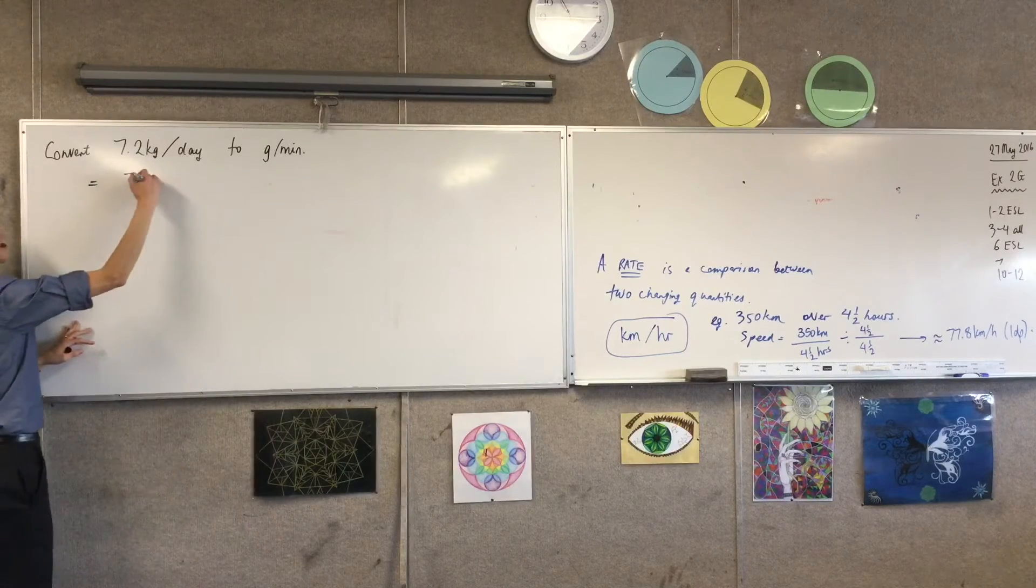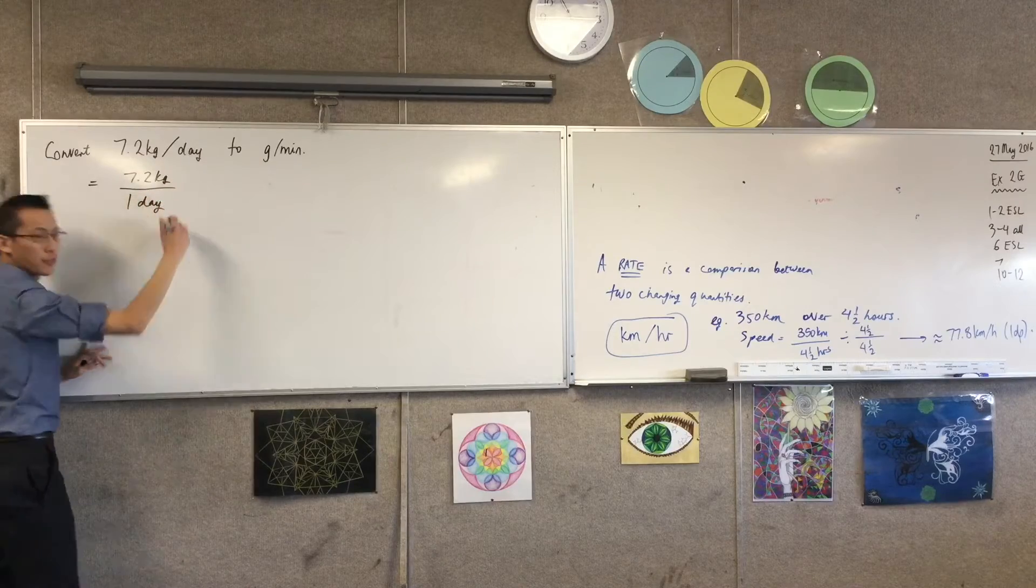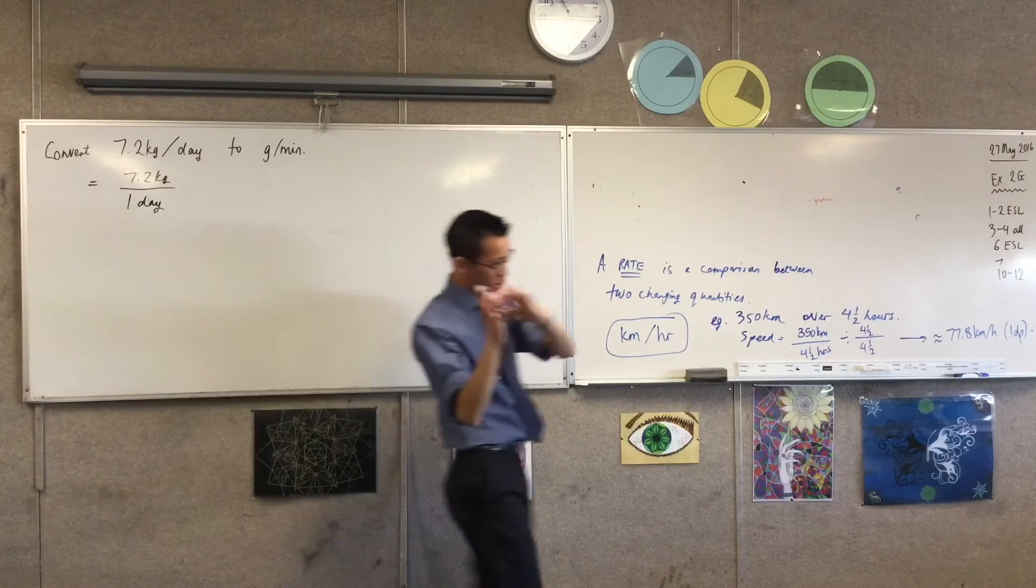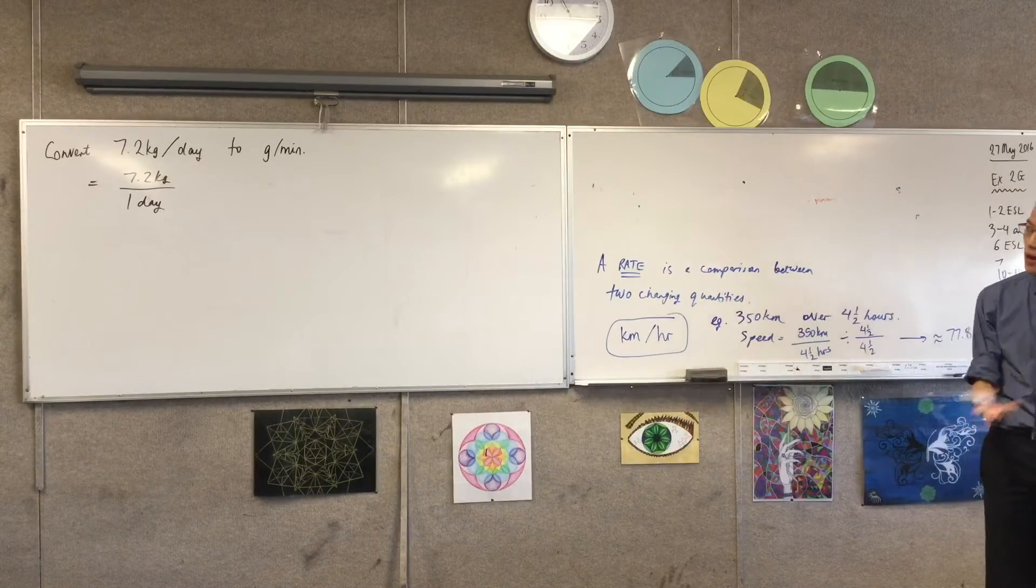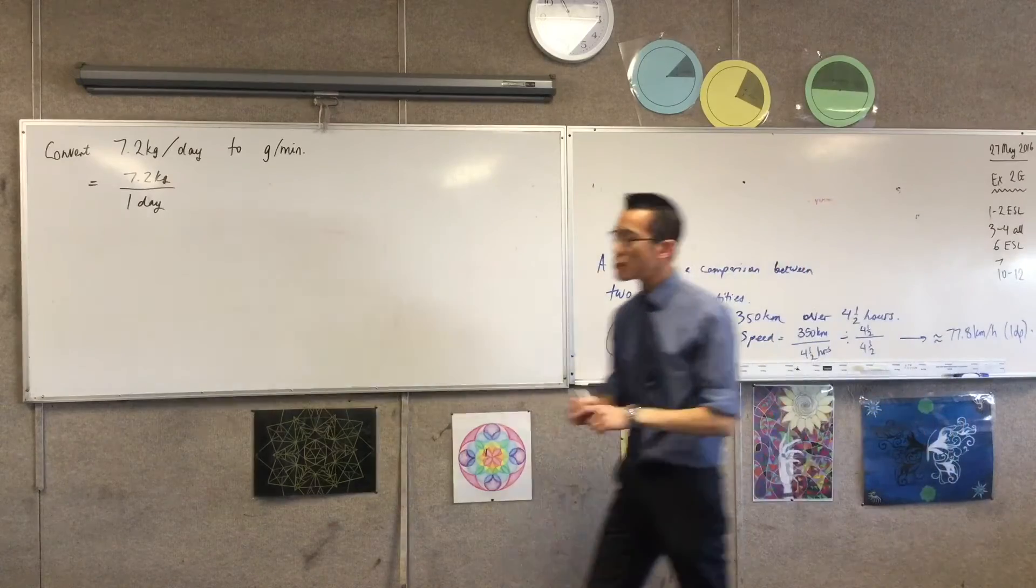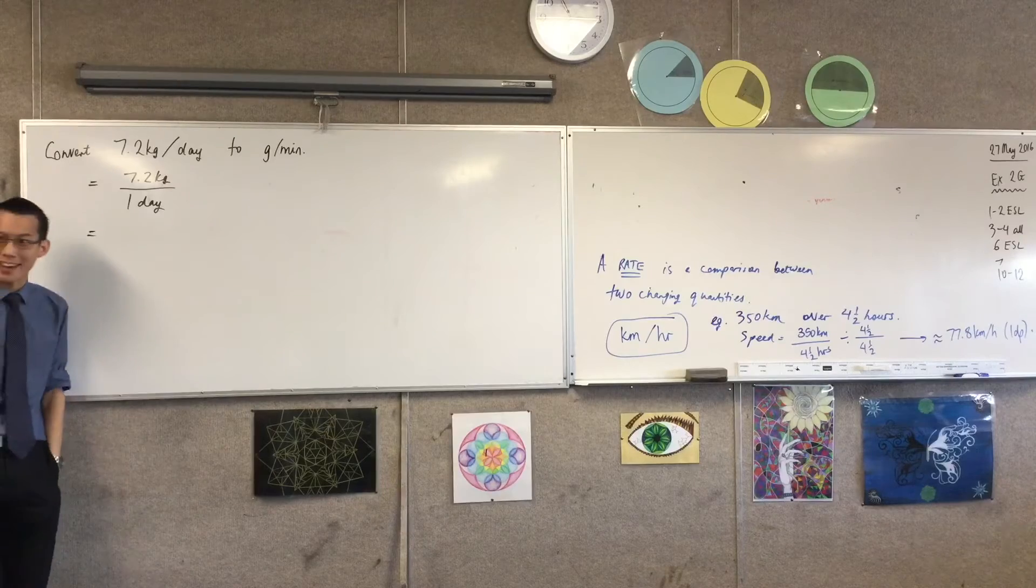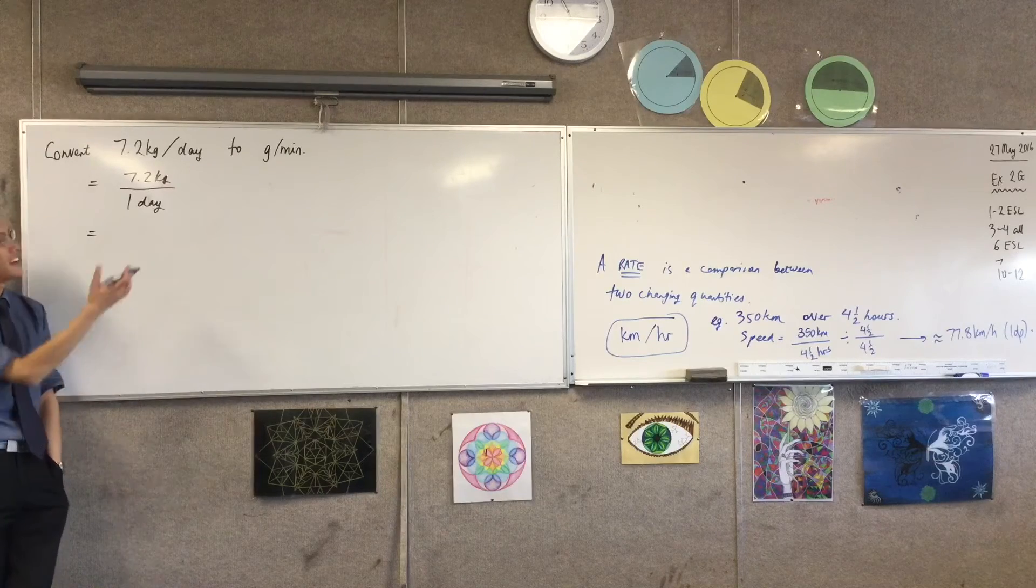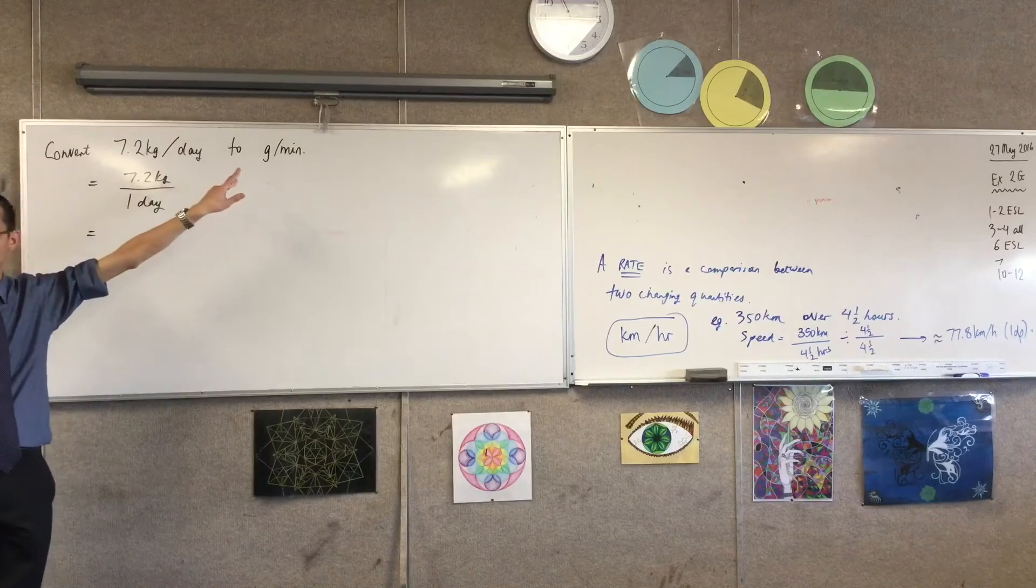So in order to help me do that, I'm going to write this as a proper fraction because people often get confused when they try and do it all in one line. So I've written it as a proper fraction, and I've also said per day is for one day. There's actually a number implied. So now I can start to climb down Ant-Man style into smaller units, and I'm going to go down as far as I need to until I hit the units that I'm actually after.